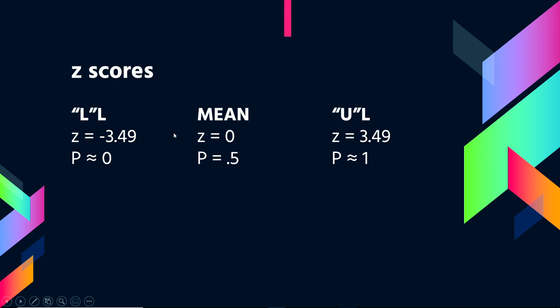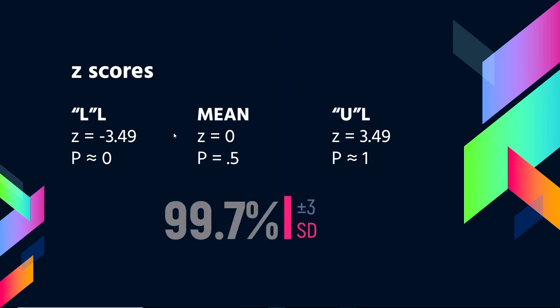And we learn with the empirical rule that 68% of scores approximately are between plus or minus one standard deviation, 95% of scores are within plus or minus two standard deviations, and 99.7% of scores are between plus or minus three standard deviations. So here we see that almost 100% of scores are within plus or minus 3.49 standard deviations.